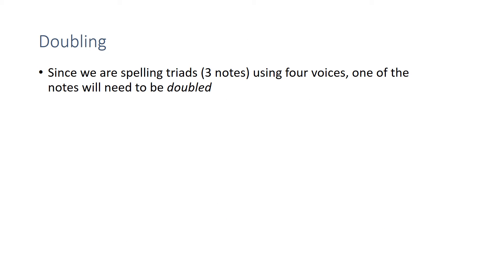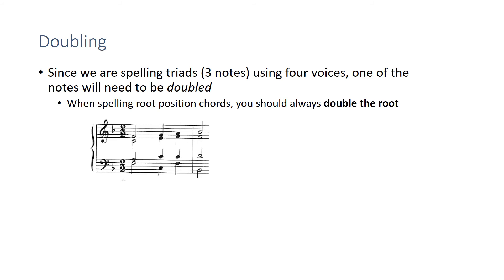Doubling: since we're spelling three-note chords (triads) but using four voices, we have to double one of the notes. For root position chords, always double the root — you'll have two roots, one third, and one fifth. Looking at this example: we have an F major chord with two Fs, a C major chord with two Cs, another F major chord with two Fs, and a B-flat chord with two B-flats. The other two notes are the third and the fifth. This is the standard doubling, and here's how it sounds — it gives us a good balanced sound with a strong root.